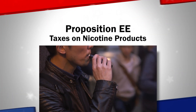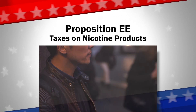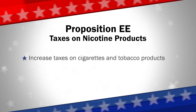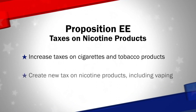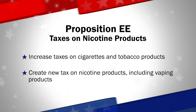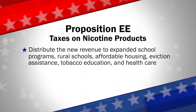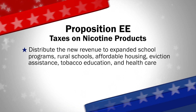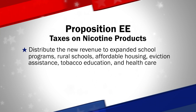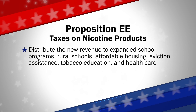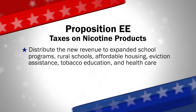Next up is Proposition EE, placed on the ballot by the Colorado legislature. If approved, it would increase taxes on cigarettes and tobacco products, create a new tax on nicotine products including vaping products, and distribute the new revenue to expanded preschool programs as well as K-12 education, rural schools, affordable housing, eviction assistance, tobacco education, and health care.